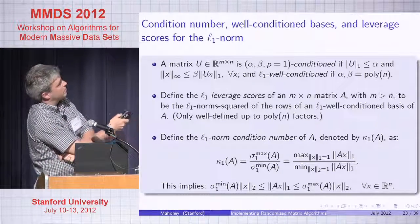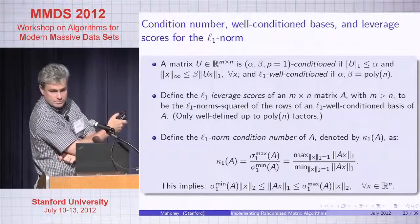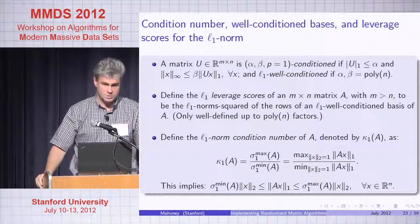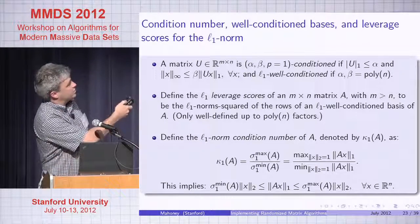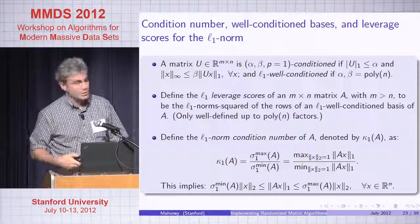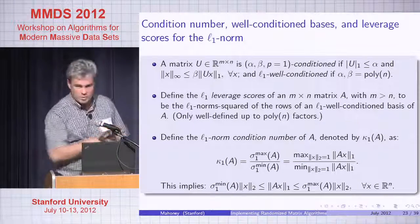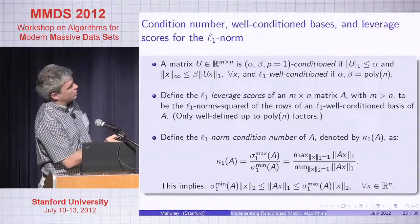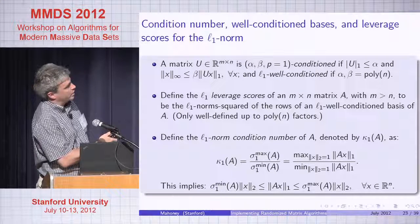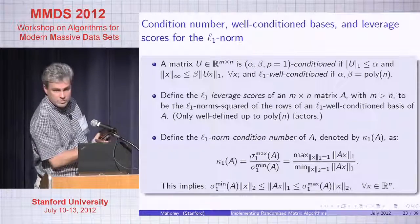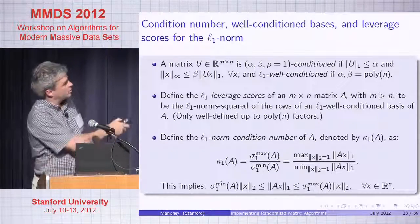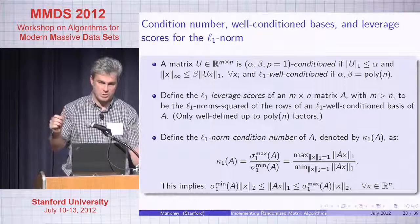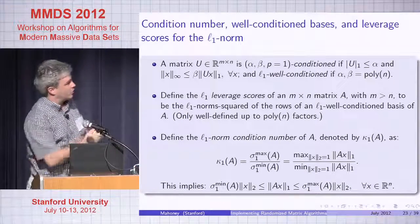In the L2 case, U is an orthogonal matrix — an N by D orthogonal matrix where D is small, Frobenius norm is the square root of the low dimension, and it doesn't stretch things by much. Define the analog for L1: if alpha and beta are small — meaning low-degree polynomial in the low dimension — this is a well-conditioned basis. Define the L1 leverage scores to be the L1 norms of the rows of a one-conditioned basis. These aren't rotationally invariant, so they're well-defined only up to low-degree polynomial factors.